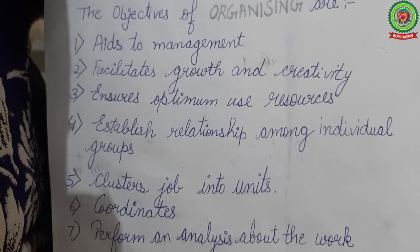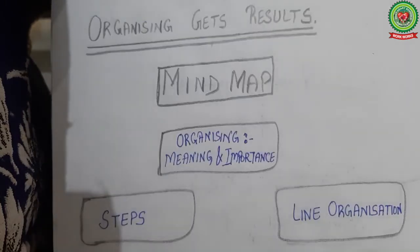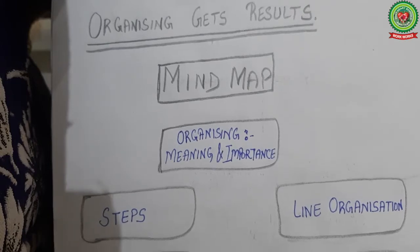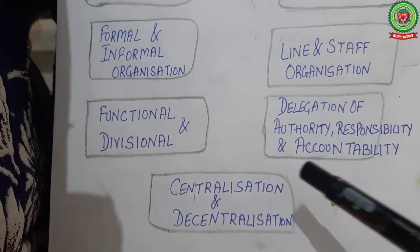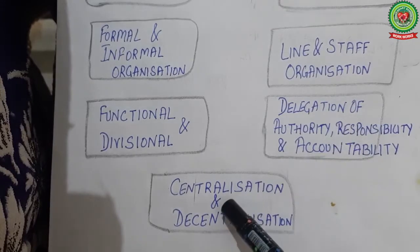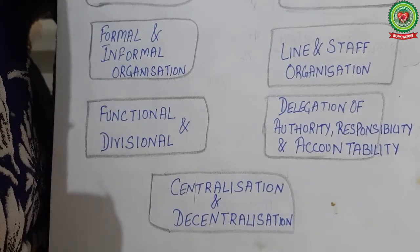In chapter number 9 on organizing, we have already covered meaning and importance, steps, line organization, formal and informal organization, line and staff organization, functional and divisional structure. Today we will cover delegation of authority and centralization and decentralization, completing the chapter. Next week we start the next chapter.